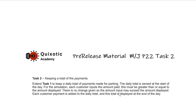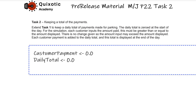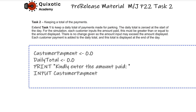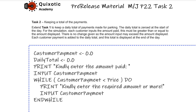We will add the payment to a variable — we are keeping a daily total. We will display the daily total at the end of each day and set it to zero at the start of each day. Looking at the pseudo code, we have introduced two new variables: customer payment and daily total. We will print a statement to ask the customer to enter the amount paid, take the input, and store it in customer payment.